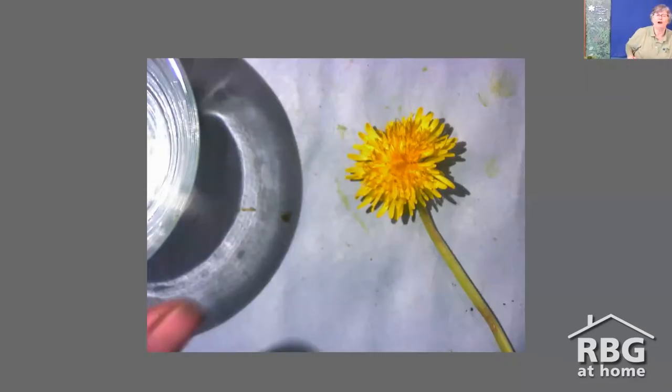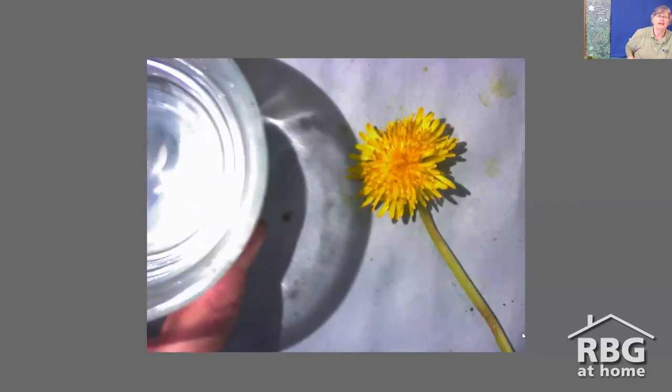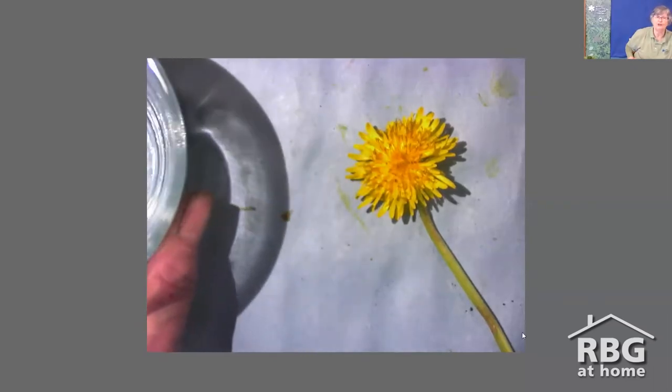And actually, it's the flower stalks of the dandelions. So what you'll need is dandelions. You don't have to pick the whole plant. You just have to pick enough of the flower stalk that you can use that. You'll also need a container of water. It can be a glass of water. It can be any sort of container you want.